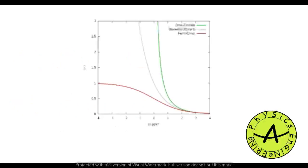This graph shows the comparison of average occupancy of the ground state for three statistics.